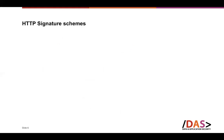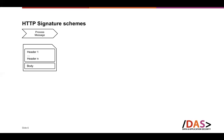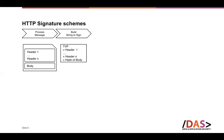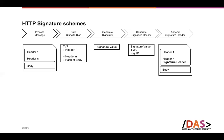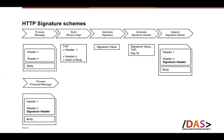This is a well-known problem, and many solutions have been proposed. One is HTTP signature schemes, which work by computing a signature over the entire HTTP message so that a client can verify whether the message has been modified. The signature process works as follows: we build a string-to-sign based on a concatenation of header fields and the hash of the body, then build a signature value. We also build a signature header that includes the signature value, a time-variant parameter to avoid replay attacks, and a key ID for verification.